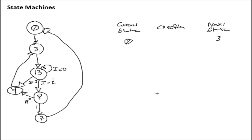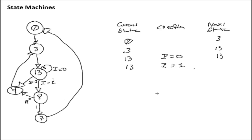From state three, again there's no condition, so we go straight to 13 — three goes to 13. Now in state 13 we have three transitions, producing three entries in our table. First, in state 13 if i is equal to zero, we transition back to state 13. Second, if we are in state 13 and i is equal to one, we transition to state eight. Third, in state 13 if i is equal to negative one, we transition to state nine.